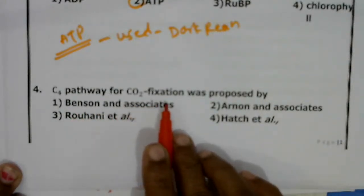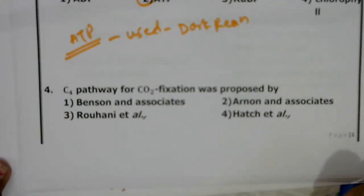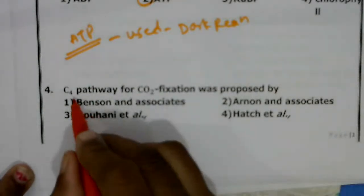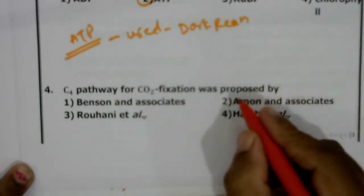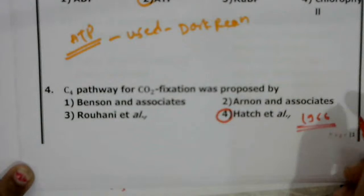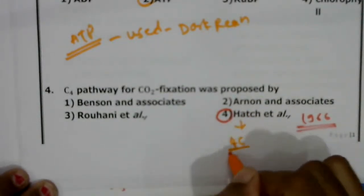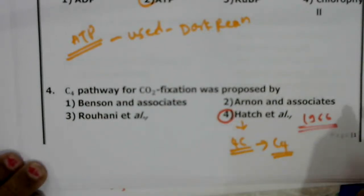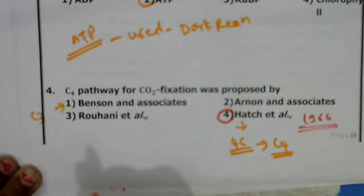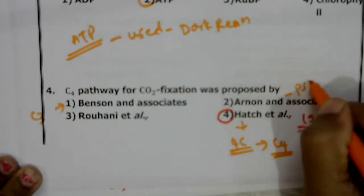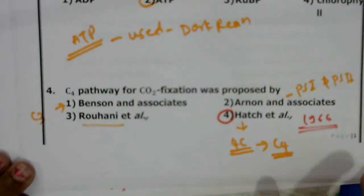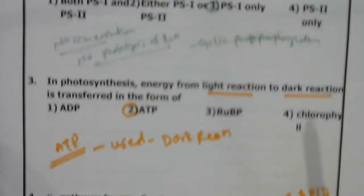Next: the C4 pathway for CO2 fixation was proposed by whom? The C4 pathway was proposed by scientists Hatch and Slack in 1966. The first stable compound in this pathway is a four-carbon containing substance, so it is called the C4 pathway. Calvin and Benson discovered the C3 cycle. Arnon and associates discovered the two photosystems PS1 and PS2. Correct answer: fourth option, Hatch and Slack.